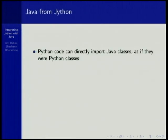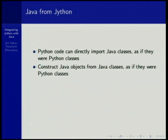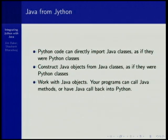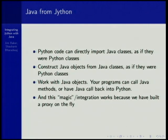In terms of the use of Java from Jython, Python code can directly import Java classes as if they were Python classes — and I think this is how people know Jython. You can construct Java objects from Java classes as if they were Python types. You can work with Java objects, call Java methods, or have Java call back into Python, as if it were just Python. The reason this integration works at all is because we have built a proxy on the fly for you, bridging the difference between Java and what it looks like in your Python code.